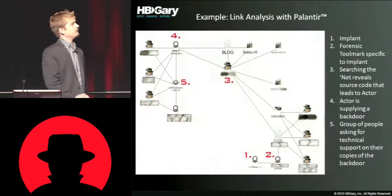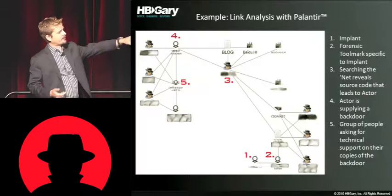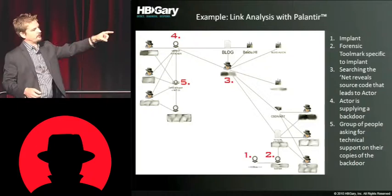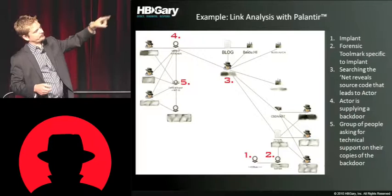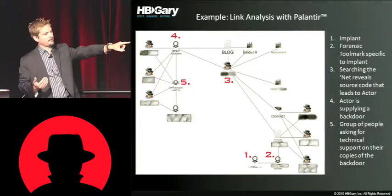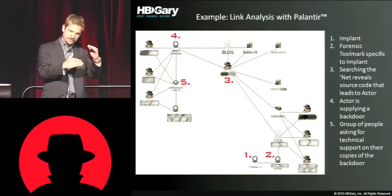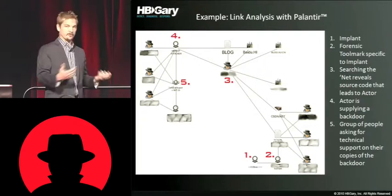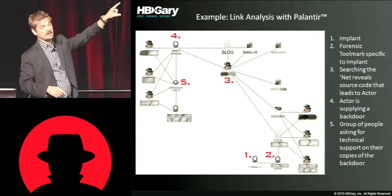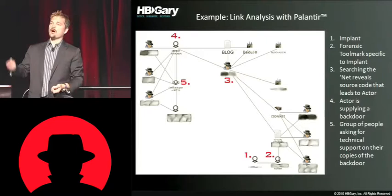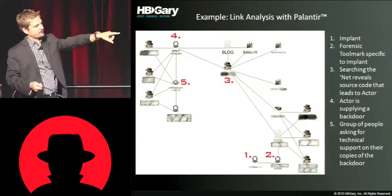We use Palantir at HBGary for some of our link analysis. At the bottom at number one is a source code artifact — actually an artifact in the binary — that we found in the Aurora dropper. We followed that to number two where we found a forensic tool mark, then did a search on the net, which led us to number three: a person who posted source code in incomplete form that contained that tool mark. That means you couldn't have cut and pasted this and made that dropper — this guy only put a portion of it on there. I did a search on that information, found his CSDN page, his Baidu page, his QQ numbers, and found that he had another forum elsewhere where he was selling something called NetBot Attacker. In that forum were people asking for technical support on their copies of that remote access tool. So you can't get better than this — going from a forensic tool mark to the developer to the users of the malware itself.